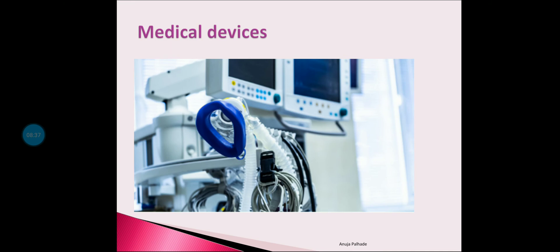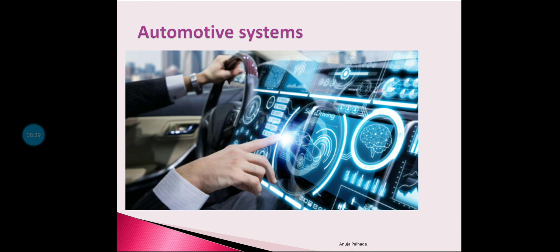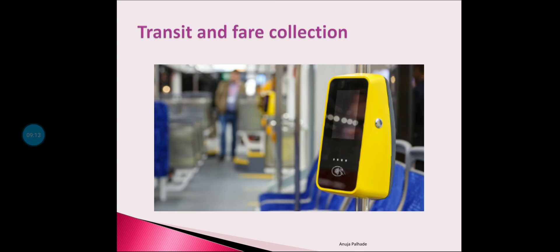The next application is the automotive system. In automotive systems, embedded systems are designed and installed to enhance the safety of automobiles. Thanks to these safety systems in vehicles, traffic fatality rates have plummeted in recent years. Examples of automotive embedded systems include car navigation systems, anti-lock braking systems, and vehicle entertainment systems.